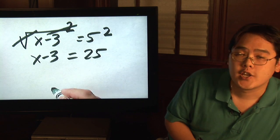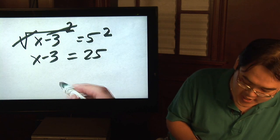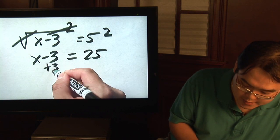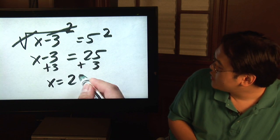So all of a sudden, your equation doesn't seem difficult anymore, because all you have to do is get x by itself and solve for x. So basically, you just need to add 3 to both sides. So you'll have x equal to 28.